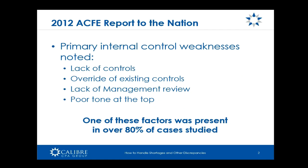Let's talk a little bit about background and why this is important. In 2012, the ACFE — the Association for Certified Fraud Examiners — issued their report to the nation, and what they found were these primary internal control weaknesses present in over 80% of the fraud cases they studied: a lack of controls, an override of existing controls, a lack of management review, and a poor tone at the top.